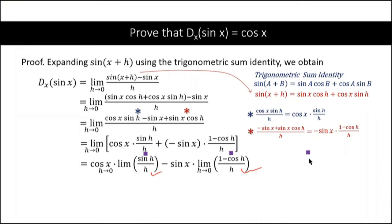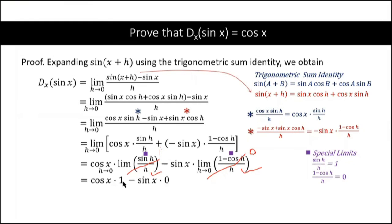The special limits, highlighted in violet, are: the limit of sine h over h equals 1, and the limit of (1 minus cosine h) over h equals 0. Substituting these in, we get cosine x times 1 minus sine x times 0. Since sine x times 0 equals 0, we are left with cosine x times 1, which is simply cosine x. And that's it — the derivative of sine x is cosine x.